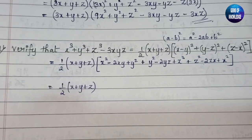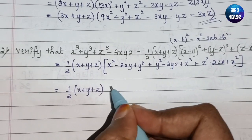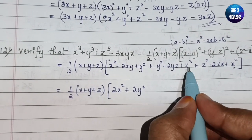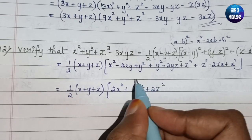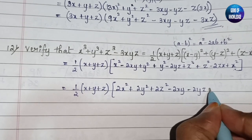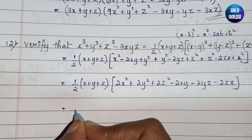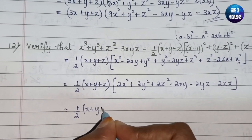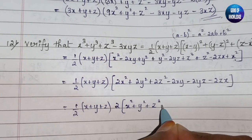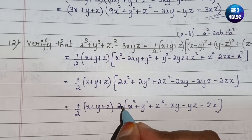The next step is: ½(x + y + z), keeping it as it is. Adding up the like terms: x² + x² = 2x², y² + y² = 2y², z² + z² = 2z². What remains is -2xy - 2yz - 2zx. Now we take 2 outside as a common factor.